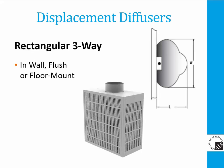A rectangular three-way unit mounts in the room in front of the wall. Discharging air from the sides and front provides a three-way hemispherical air pattern that spreads air uniformly along the wall and a shorter distance into the room.